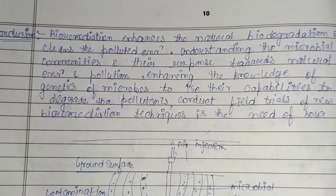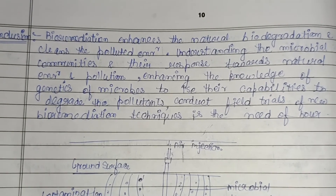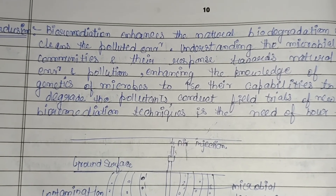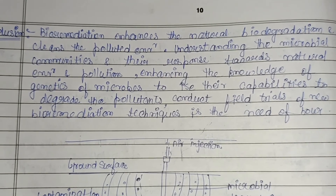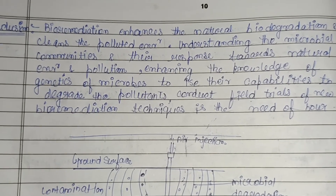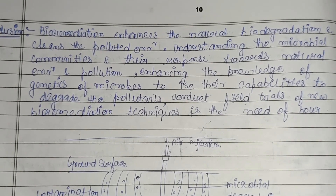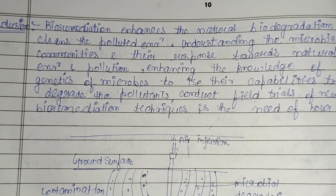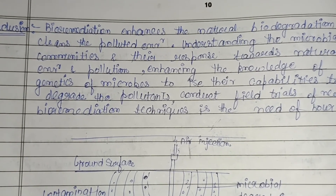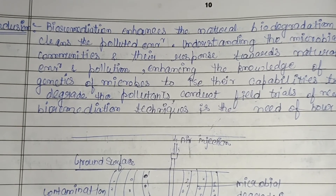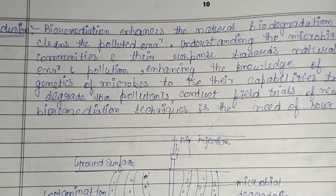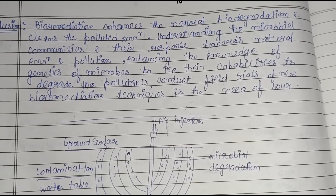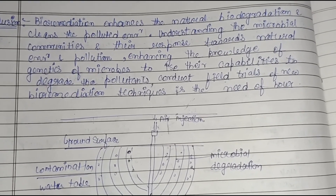In conclusion, bioremediation enhances natural biodegradation and cleans the polluted environment. Understanding microbial communities and their response to pollution, enhancing knowledge of microbial genetics to increase their capability to degrade pollutants, and conducting field trials of new bioremediation techniques are the need of the hour. By working on these factors, the bioremediation process will become more efficient, converting more contaminants into less toxic forms. That's all about bioremediation — please like, share, and subscribe.